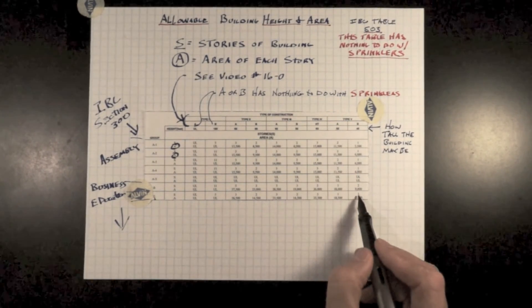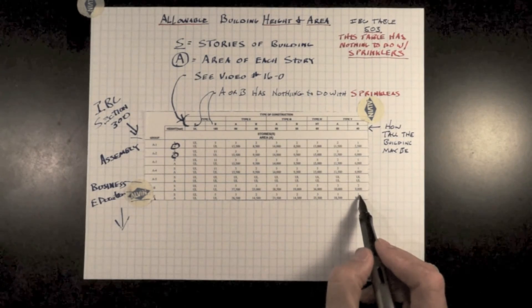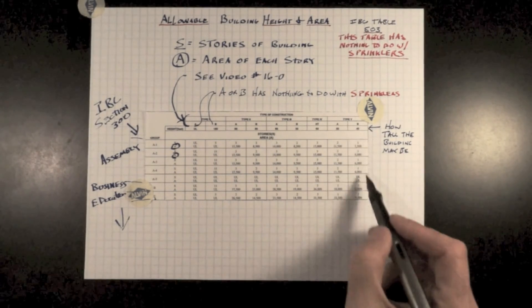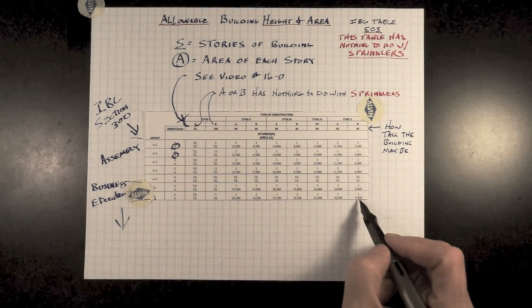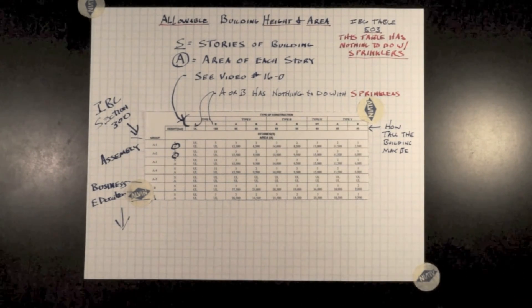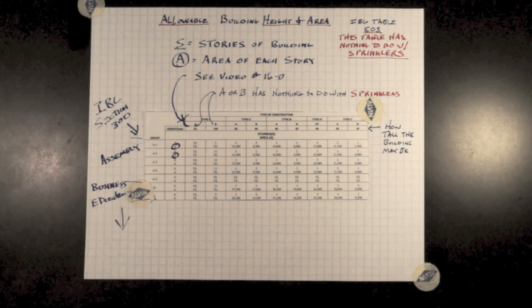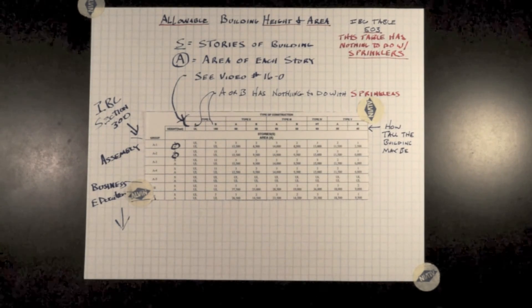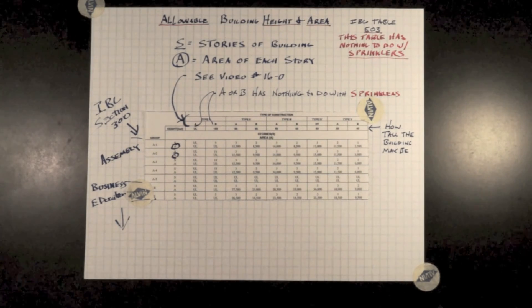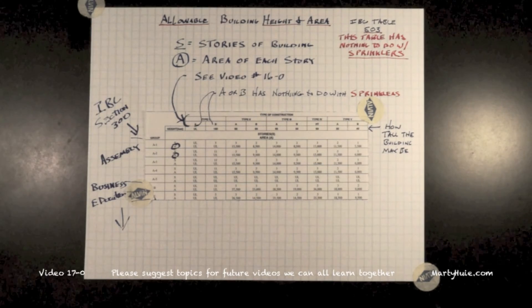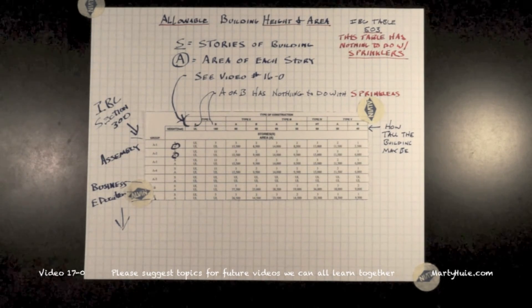But we can't go more than one story. Another calculation, along with all these, depending on your frontage of your road and whether you sprinkle or not, could increase the square footage you're allowed.